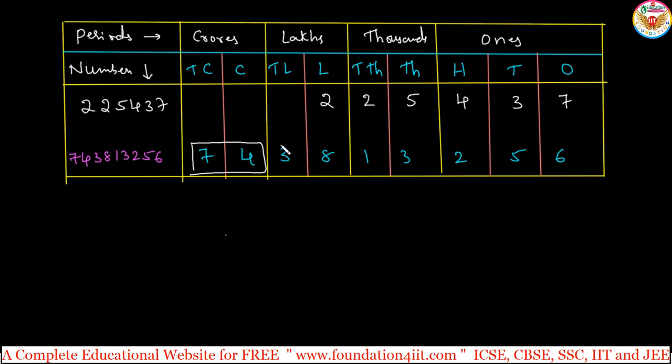So 74 crores, and next period is 38. 38 lakh. Next again, 13. So 13 is for thousands. So 13,000, next 256. Now 74 crores, 38 lakh, 13,256 is the number in this our Indian system. In Indian system, first 3, next followed by 2, 2.